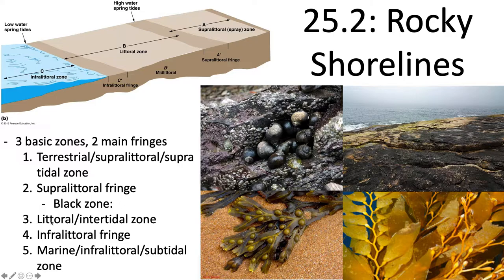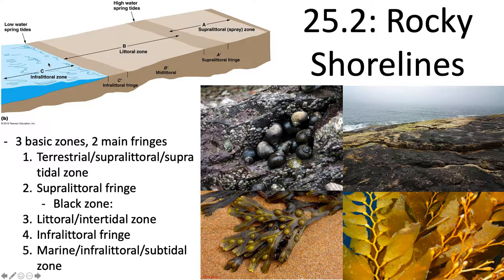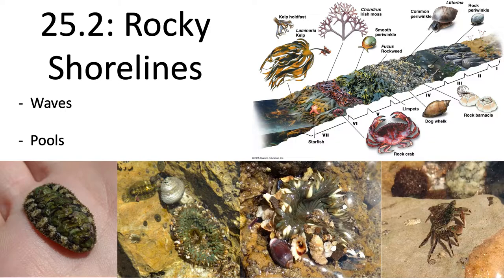Then you have the infralitoral fringe between the littoral zone and the infralitoral zone. This is uncovered only at the spring tides. This is where you get Laminaria — that really large, floaty brown algae — which predominates in the infralitoral fringe. The bottom part of the shoreline is the marine zone or subtidal zone, which is almost never completely exposed but is very shallow water, with different communities of organisms living there.